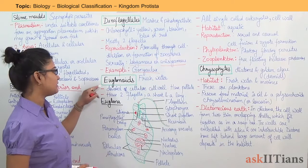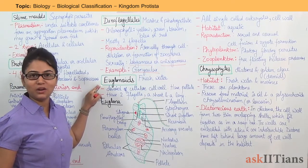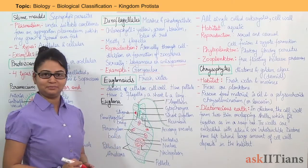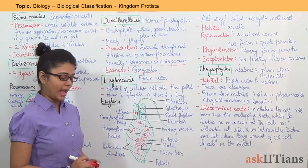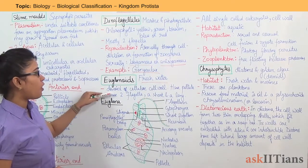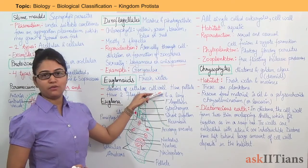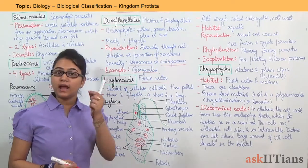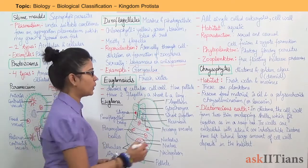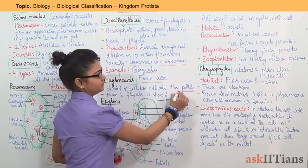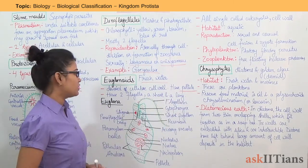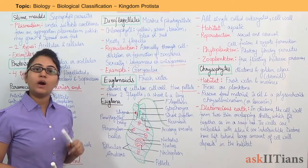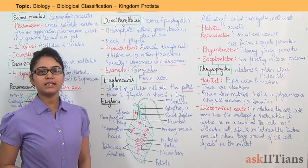Moving on to the next classification — euglenoids. Euglenoids are found in fresh water and they are devoid of a cellulose cell wall, but they have a thin outer covering known as pellicle. They have two flagella: one is a short flagellum and one is a long flagellum.